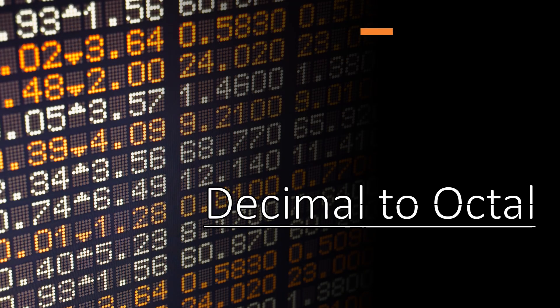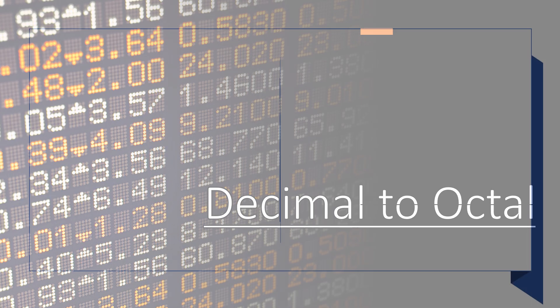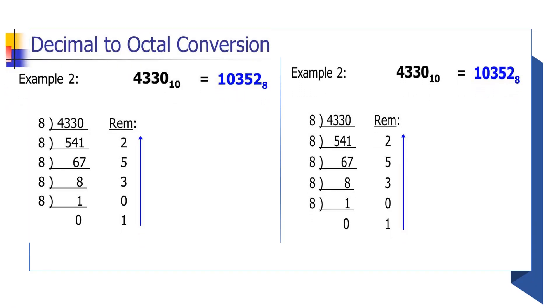Converting decimal numbers to octal. Here, divide the given number by 8 until the remainder is 0, and write the remainders from bottom to top.